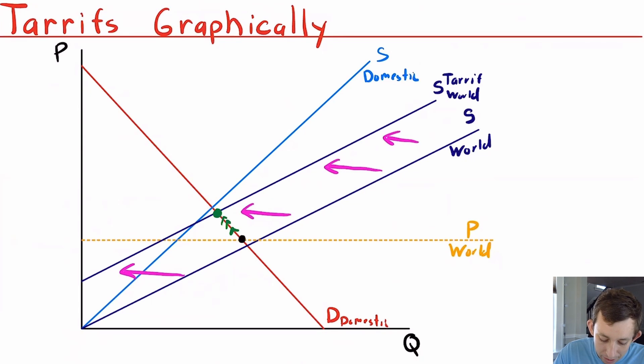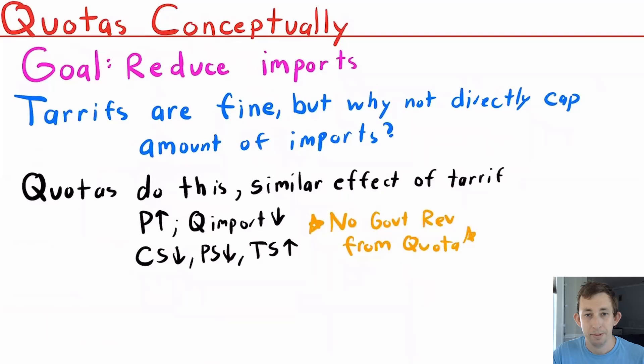But now this is the new world price, basically for us, because of the fact that this is how much you have to pay for imported donuts now. So imports are much smaller than what they used to be. Now we're going to talk about quotas just conceptually. You don't have to know how to graph a quota, so it's not even on here.